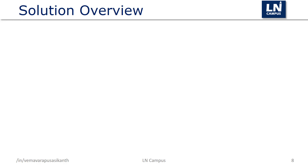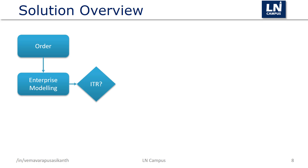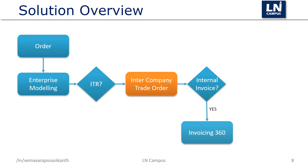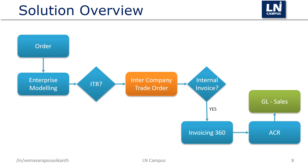When an order is created in LN, such as a sales order, a check is performed to determine if the transaction is an internal trade transaction. For example, if the finance company of the enterprise unit related to the sales office is different from the finance company of the enterprise unit linked to the warehouse, the transaction is considered intercompany trade — also called a triangular invoicing scenario. An intercompany trade order is generated in the background containing details such as the commercial price and the pricing model. When the actual transaction occurs, a transaction line is generated, which can be released to the invoicing module and a sales invoice created. Based on that, a purchase invoice can be created and processed in the purchase company.